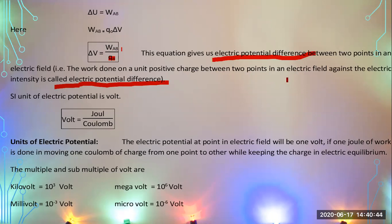You are moving a unit test charge q-naught from the negative plate toward the positive plate. Since q-naught is positive and faces an electric field opposite to its motion, work must be done. The SI unit of electric potential is the volt. Work done is measured in joules and charge in coulombs, so the unit of electric potential is joules per coulomb, which equals one volt.